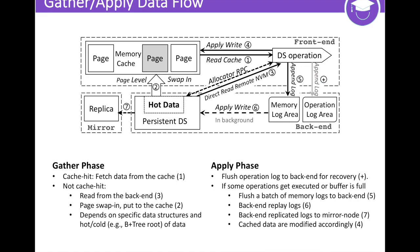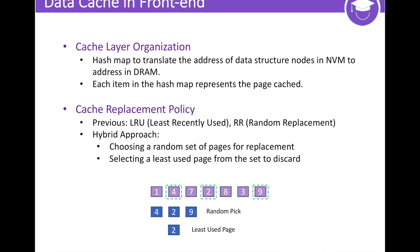In the apply phase, each modification operation causes one operation log to be flushed to the back-end for recovery. While flushing the logs, the cached data are modified accordingly. If a number of operations execute successfully or the buffer is full, the buffered memory logs will also be flushed to remote NVM. These logs are then handled by the back-end and replicated to the mirror node. Similar to BwTree, the front-end manages a hash map to translate the address of data structure nodes in NVM to addresses in DRAM. Our cache replacement policy combines LRU and random replacement, using a hybrid approach of first choosing a random set of pages, then selecting the least recently used page from the set to discard.